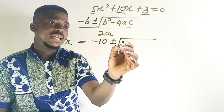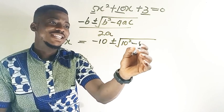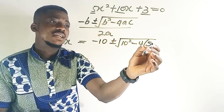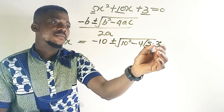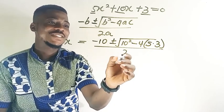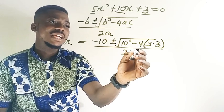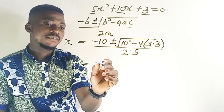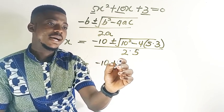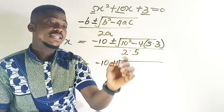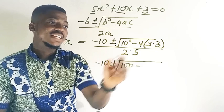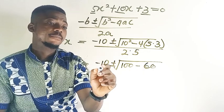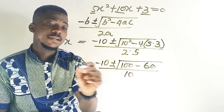Minus 4 in a bracket, a now a is 5 times c which is 3, all over 2a, 2 times a, a is 5. So we have something like that. Let's solve it. We're going to have minus 10 plus or minus, 10 squared will give us 100, then 4 times 5 times 3 that is 60, all over 2 times 5 is 10.